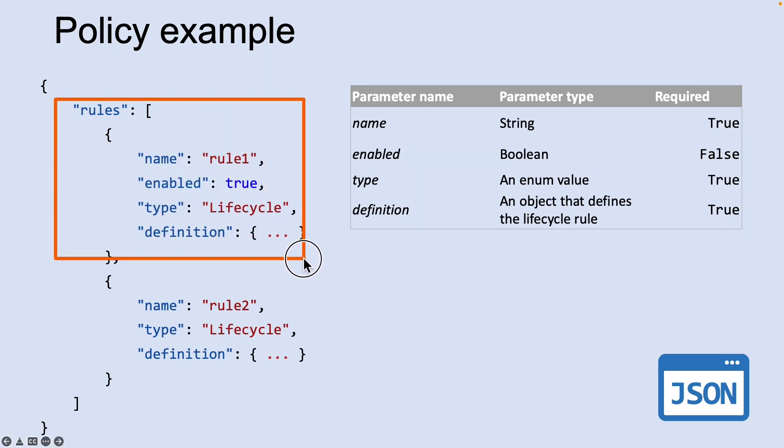A policy must include at least one rule, and you can define up to 100 rules in a policy. A rule name can include up to 256 alphanumeric characters and the name is case sensitive — it must be unique within a policy. Each rule definition is made up of a filter set and an action set.